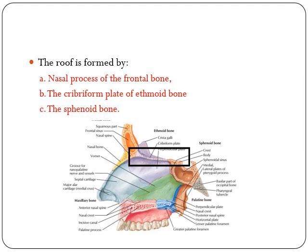The roof of the nasal cavity is formed by the nasal process of the frontal bone, the cribriform plate of the ethmoid bone, and the sphenoid bone, as seen in this picture. This is the roof of the nasal cavity.